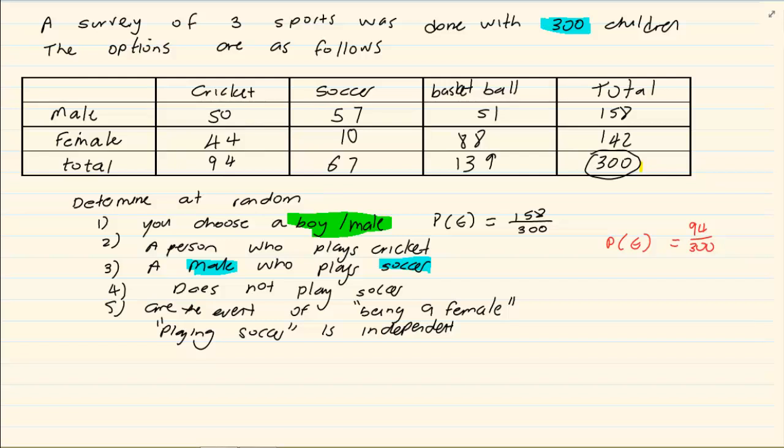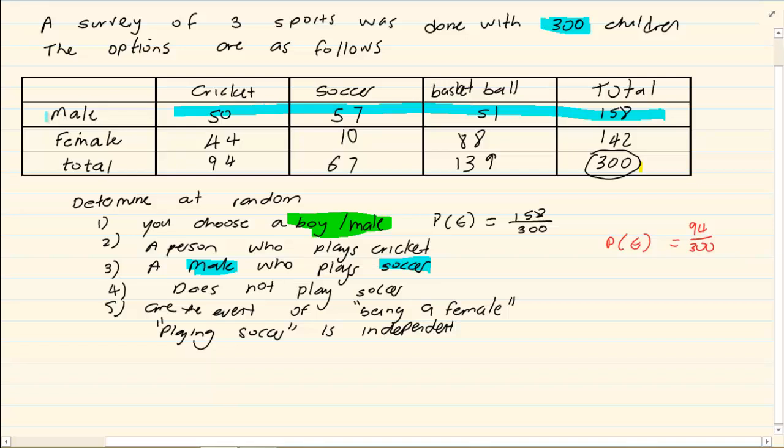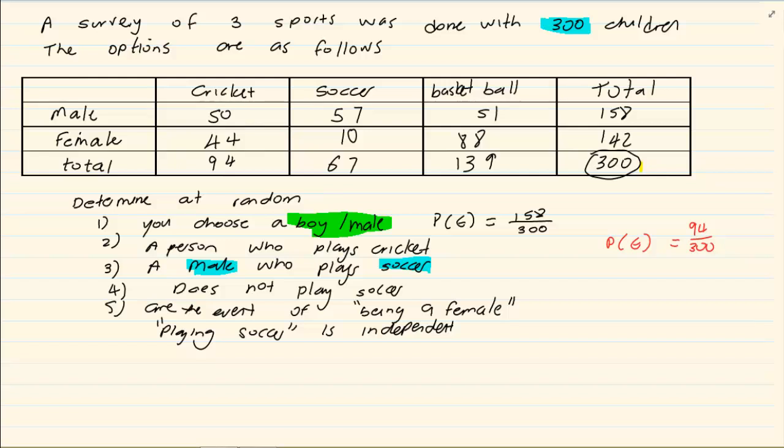What is the probability of a male who plays soccer? So I am looking at the males and I am looking at soccer. Where are they covering? Where are they coming out? They are coming out together at 57. So male and soccer, the probability is going to equal 57 over 300.